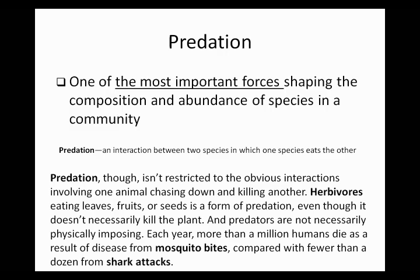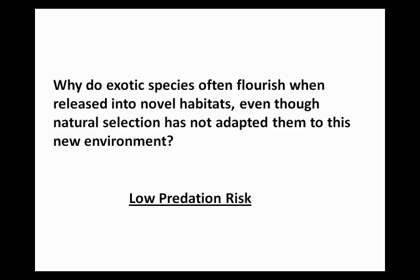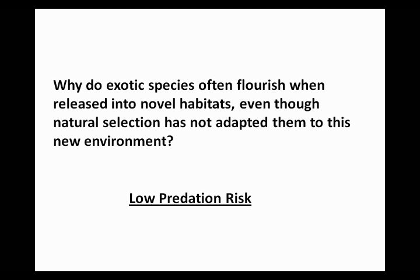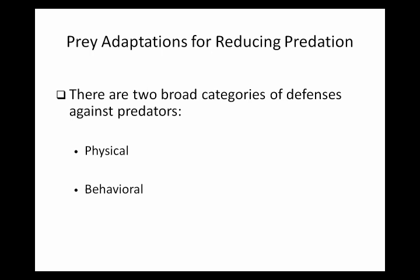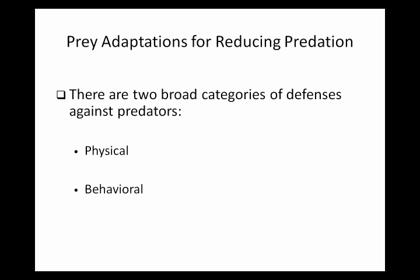We're not nearly as scared of mosquitoes as we are of sharks, even though fewer than a dozen people die of shark attacks each year. One question we may ask is why do we have such exotic species that, when released into novel habitats, can survive even though they've not adapted to the new environment? That's because they're a low predation risk. An example would be zebra mussels that were released into Lake Erie — they have spread out so much because there isn't anything feeding upon them.